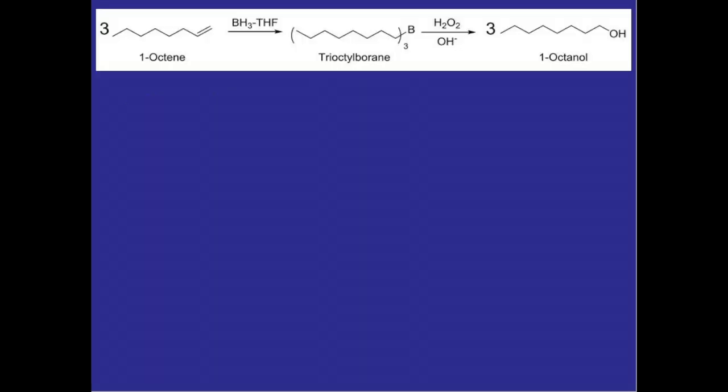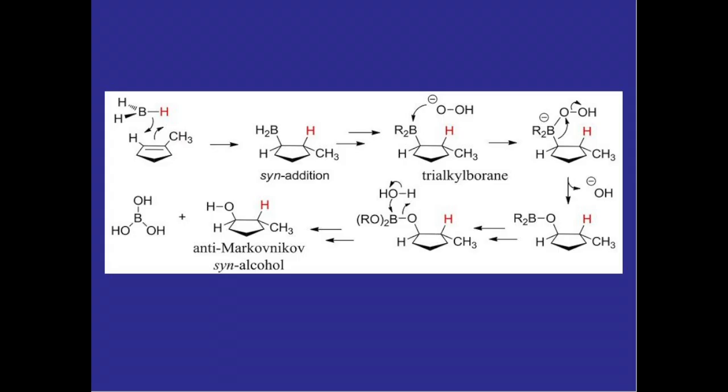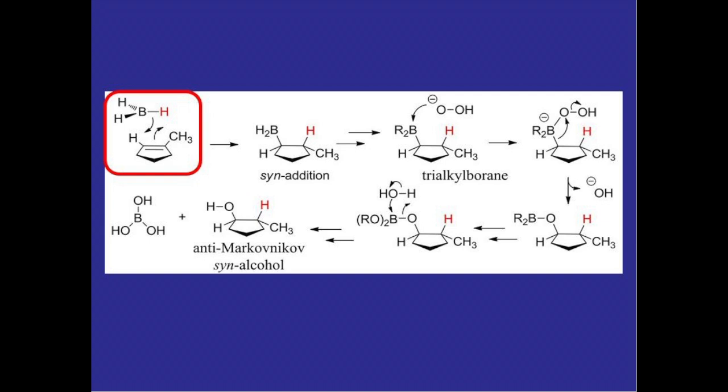This is the reaction that we will be doing. We're taking one octene and converting it into one octanol. The first step would be the hydroboration step and then the second step will be the oxidation step. Notice that in the balanced equation we have these threes here and that's just because the borane compound has three hydrogens and so it can interact with three different alkenes simultaneously and that's shown here.